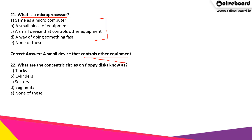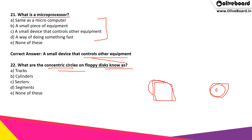The next question: what are the concentric circles on floppy disks known as? When we see a floppy disk, it has concentric circles which are known as tracks.